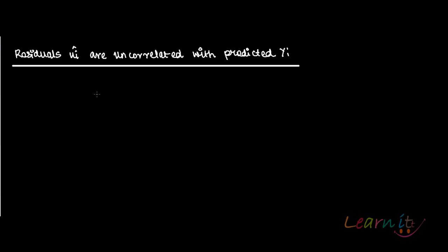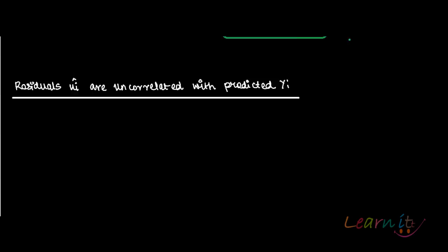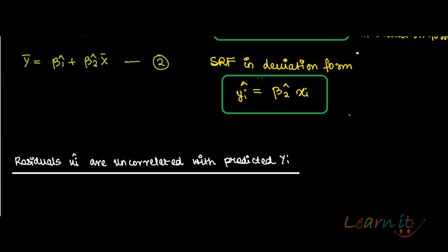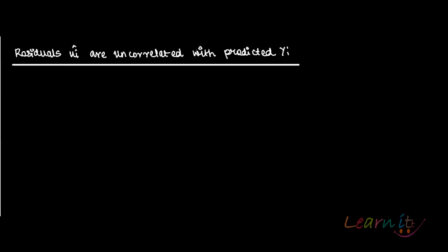In this recording we'll prove that residuals ui hat are uncorrelated with predicted yi. In deviation form, the sample regression function can be written as yi hat equals beta 2 hat xi.